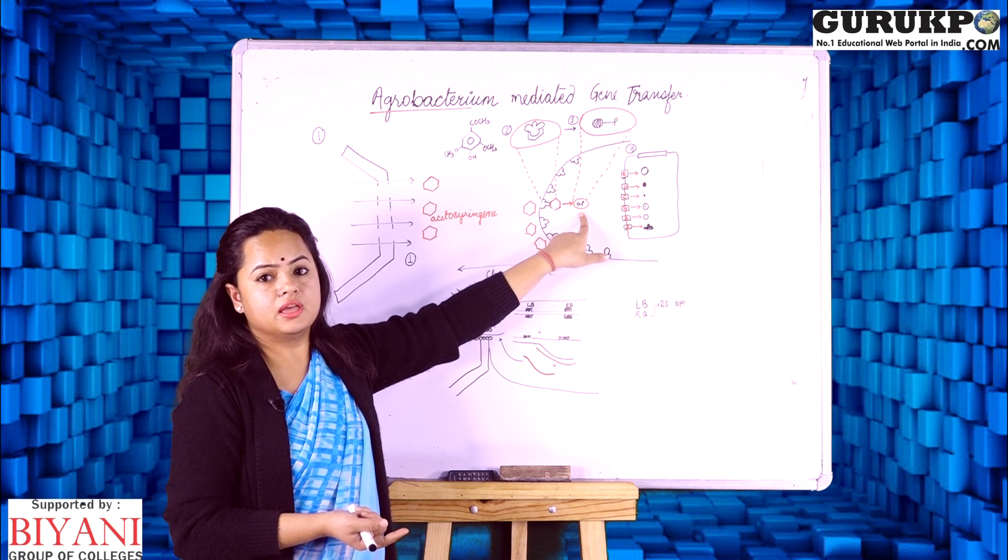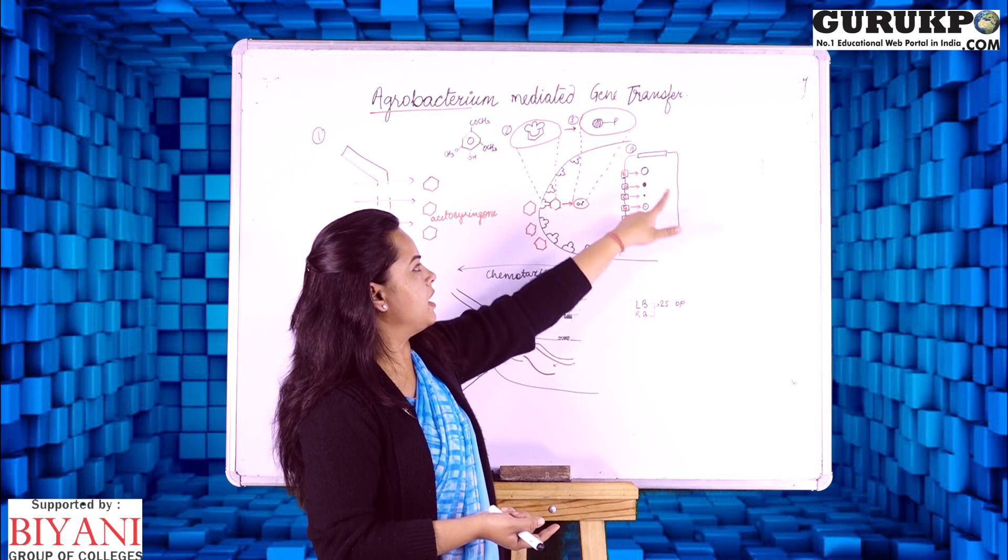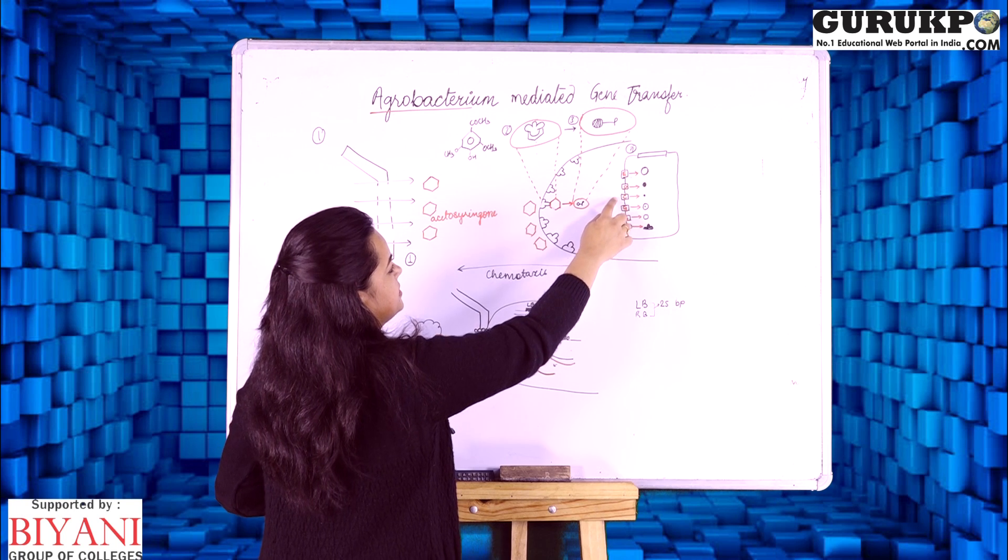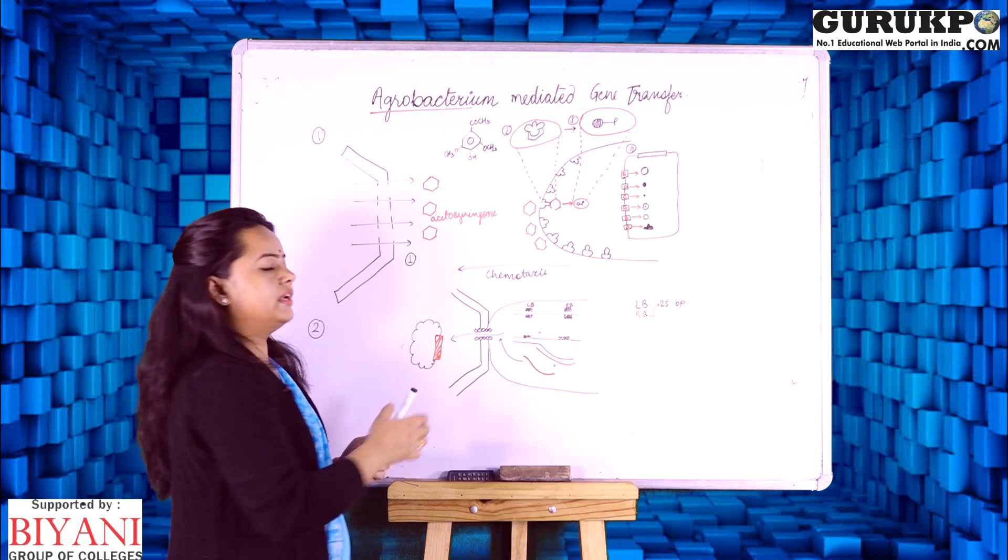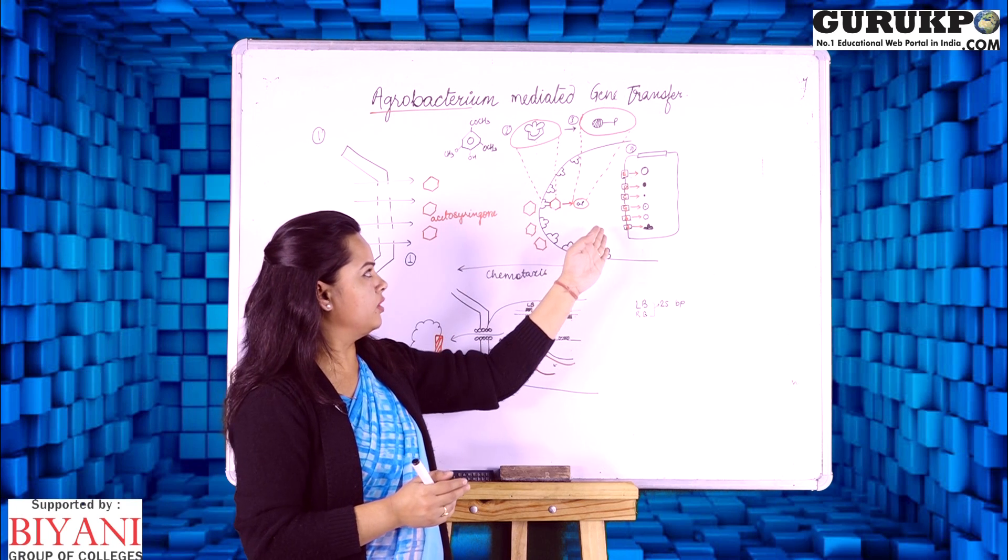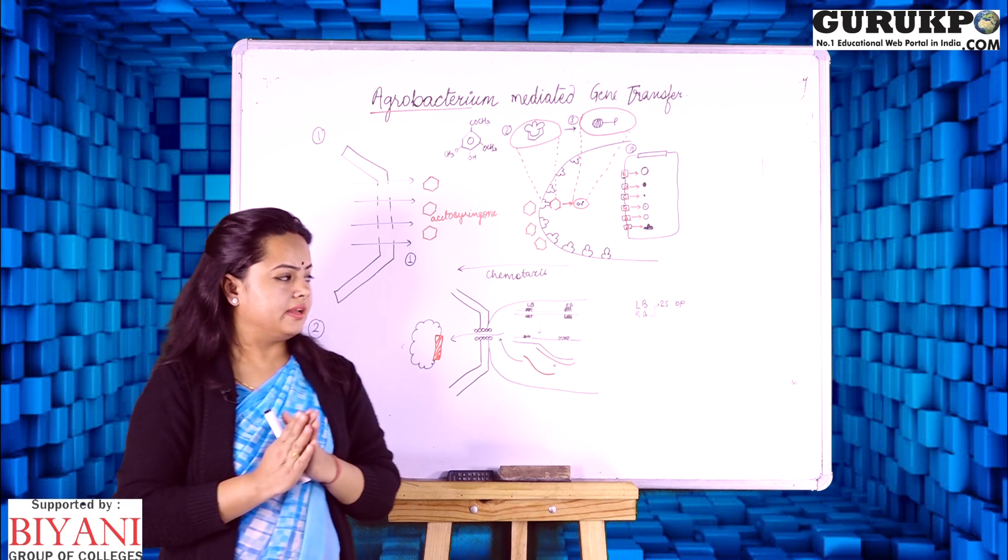This complex will activate another vir region that is VirG part and in third step this will activate the VirG gene of the bacterial genome and it will activate the whole T-DNA part of the genome. It is having A, B, G, C, D, E genes located at the T-DNA region where it will be up and down regulated as per the availability of the substrate for the whole reaction mechanism.